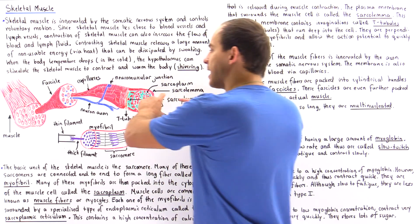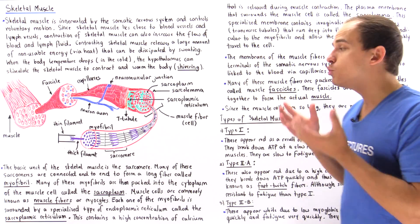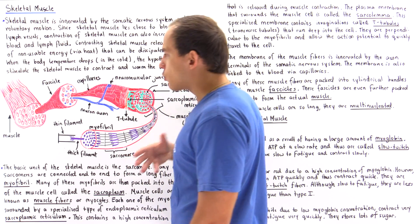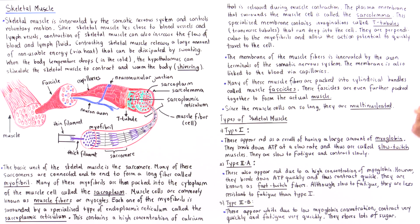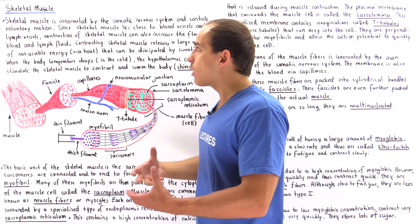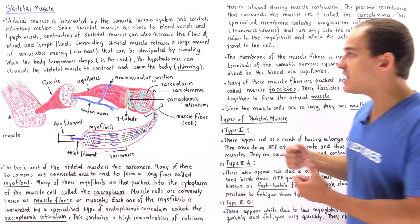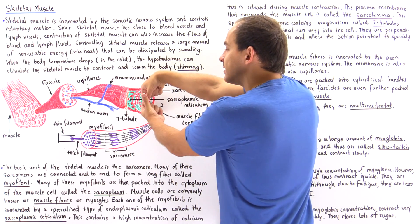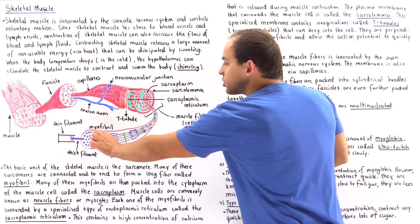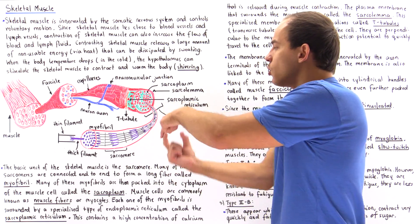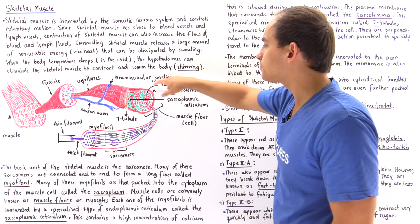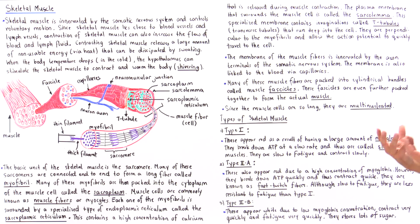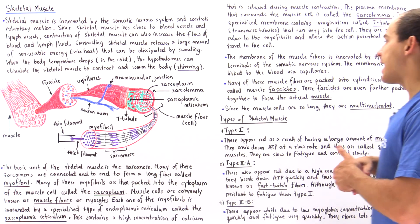Since our muscle cell is so long, it contains many nuclei, meaning skeletal muscles are multi-nucleated. Just like neurons, skeletal muscle cells do not divide by mitosis. The way skeletal muscle grows when we exercise is by increasing the thickness of the muscle cells — increasing their diameter — because the myofibrils grow as the sarcomeres grow. This increases the size of the muscle cells and ultimately the size of the muscle overall. This type of growth is known as hypertrophy.